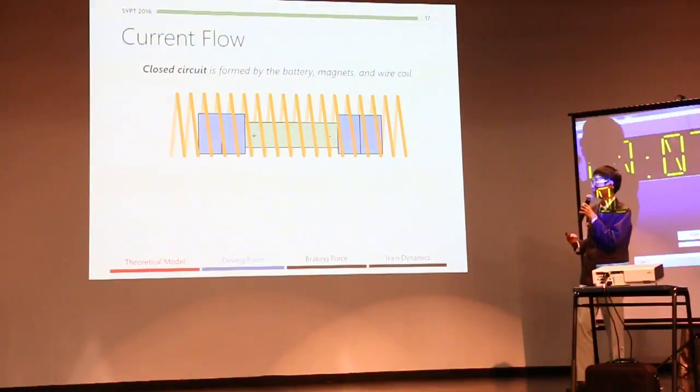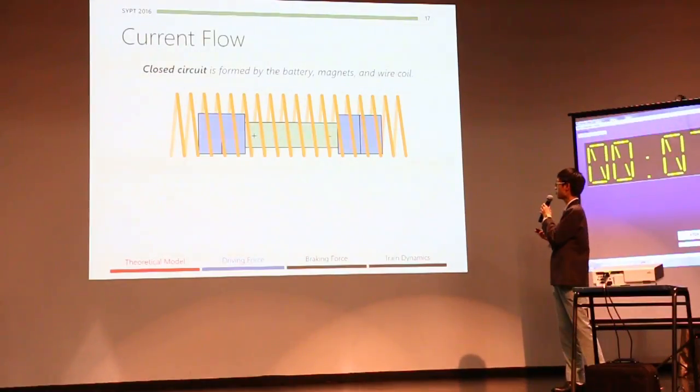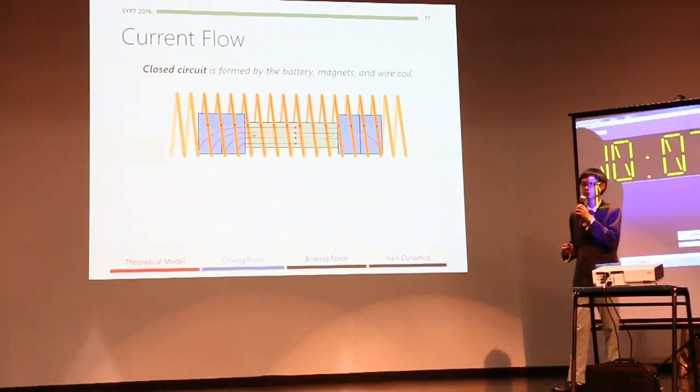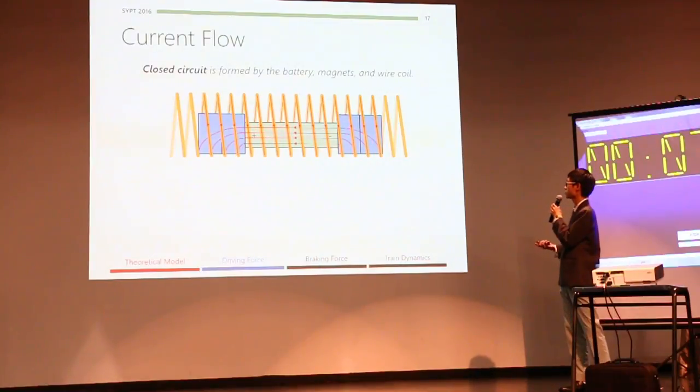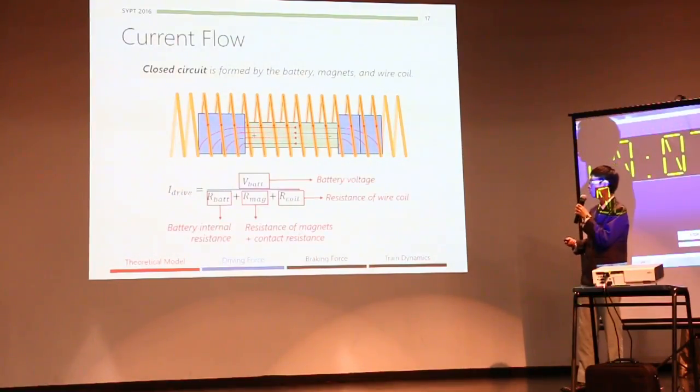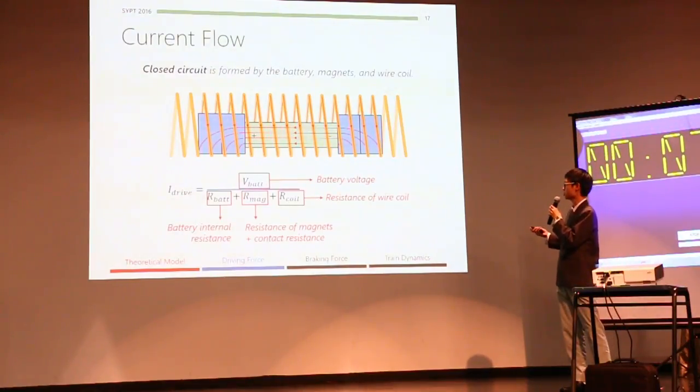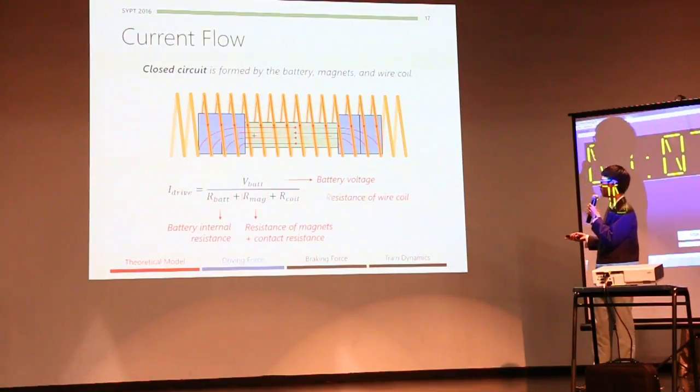Now, to visualize the current flow in our system, we can visualize it as originating from our battery, going into the magnet, into the wire coil, and then back into the battery. So this allows us to write Ohm's law as such, and to calculate the current density inside our coil. We know that in this equation, we can measure the battery internal resistance easily, and we can also calculate the resistance of the wire coil through this equation.